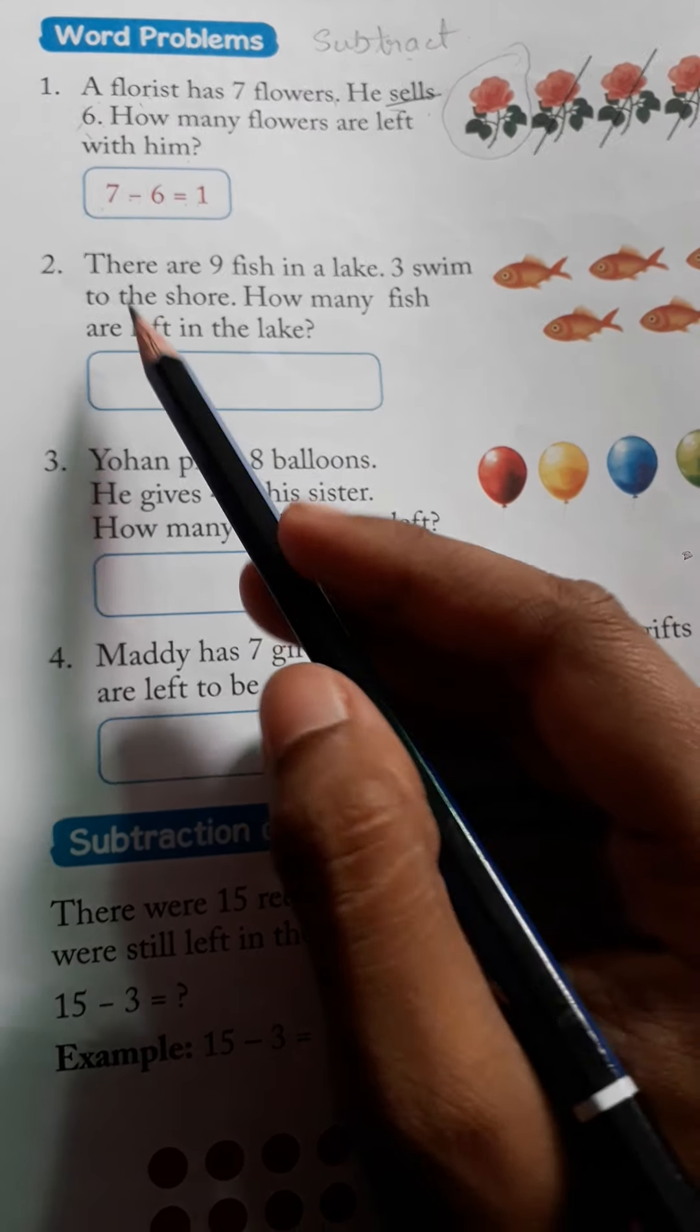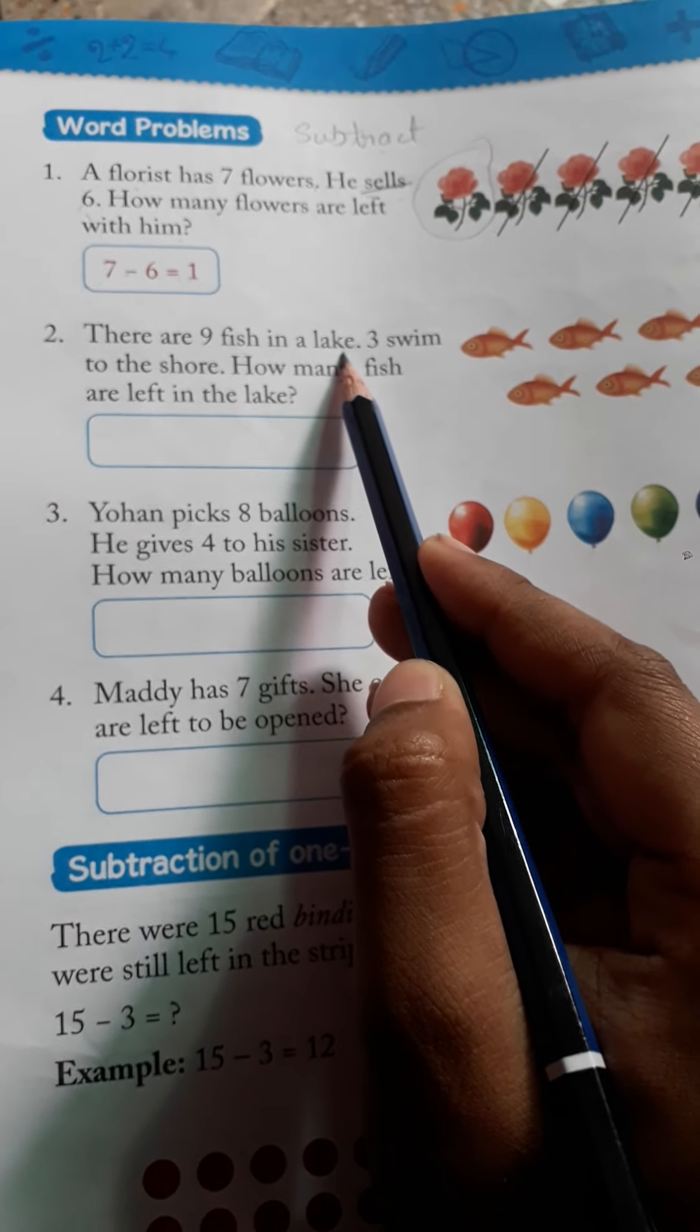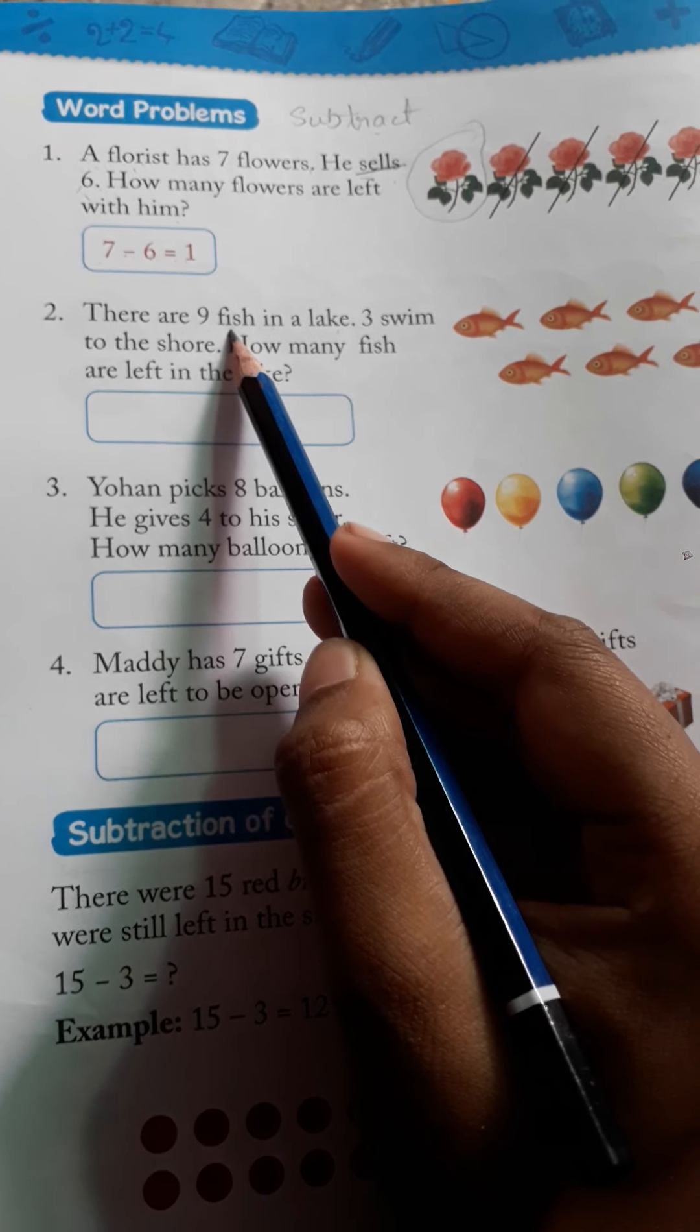Now we will see the second word problem. There are 9 fish in a lake. There is a lake and there are 9 fishes.